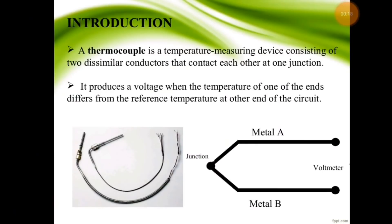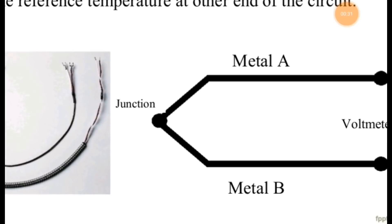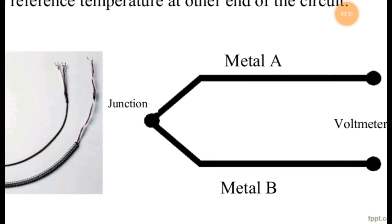It produces a voltage when the temperature of one of the ends differs from the reference temperature at the other end of the circuit. This diagram shows the thermocouple: metal A and metal B meet at a junction, and the other ends of the metals are connected to a voltmeter to measure the voltage.